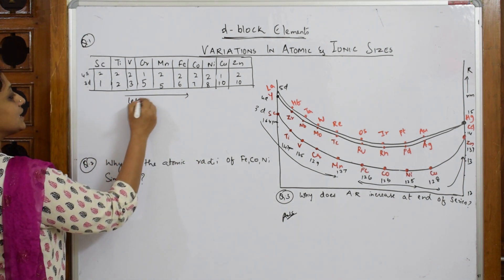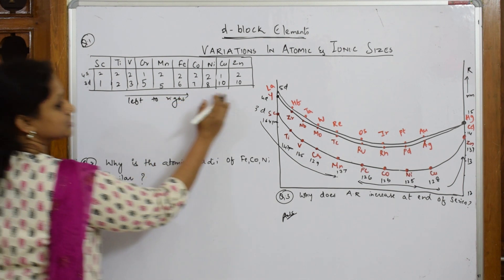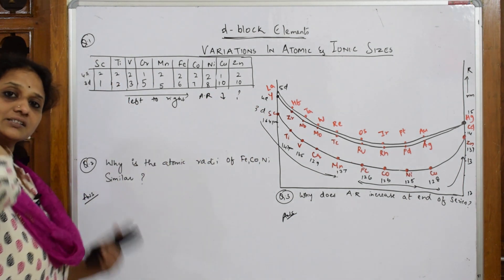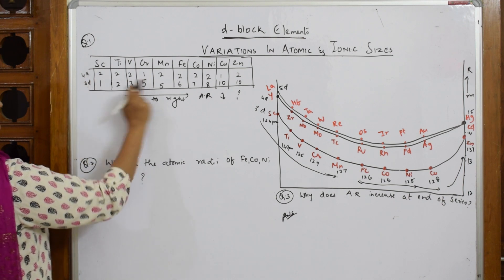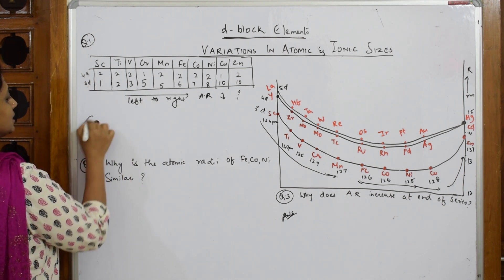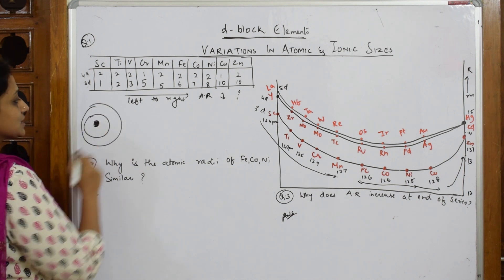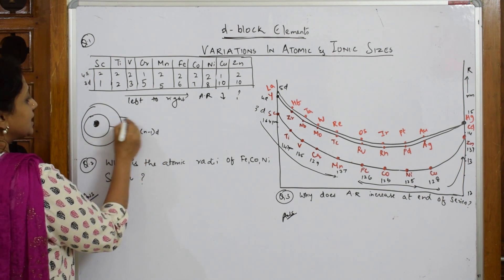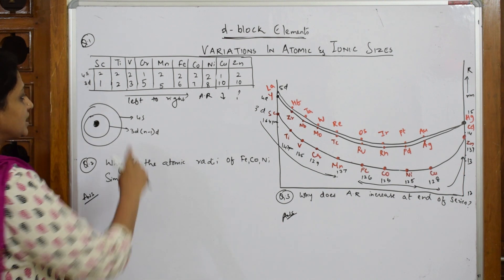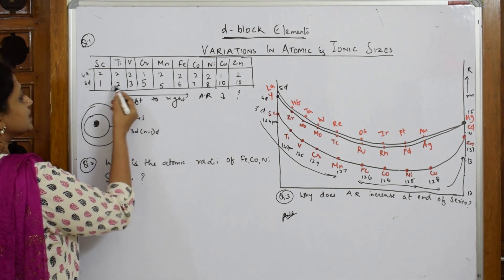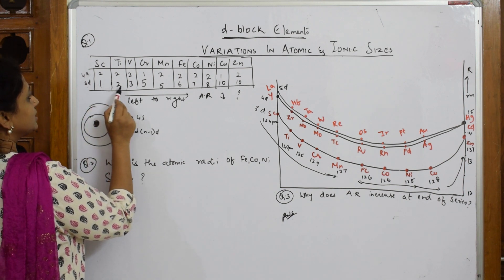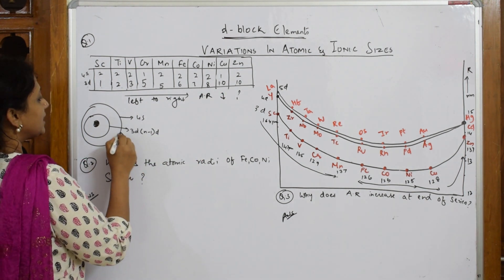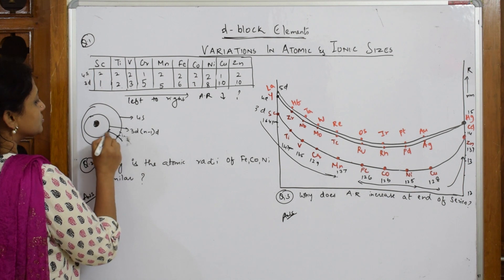The first question is: when we move from left to right in a period, why does atomic radii decrease? When we look at the filling of electrons — the nucleus, the shells, the 3D shell which is your n-1 d (penultimate shell), and the 4s electron — every time as we move left to right, the electron gets added to the same 3D shell. As electrons add to the 3D shell, protons also increase in the nucleus.